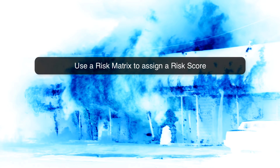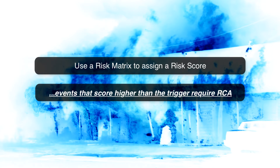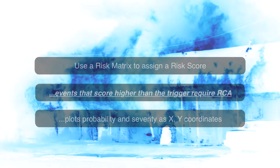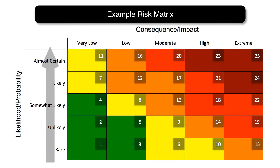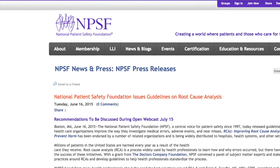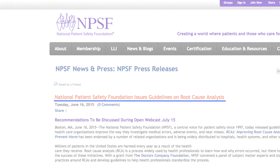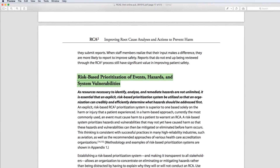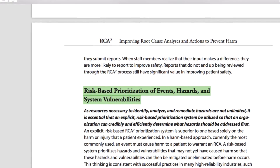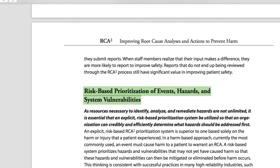We use a risk matrix to help determine a risk score for the event. Events that score higher than the trigger require an RCA. A risk matrix plots probability and severity as XY coordinates — the version I'm showing you uses five different levels for each. There are different types of risk matrices, and I'd encourage you to do a little research to choose the type that's right for you. The National Patient Safety Foundation recently released a document called RCA Squared, which calls on healthcare organizations to move towards risk-based triggers. A mature RCA program in any organization, regardless of industry, would benefit from such a move.